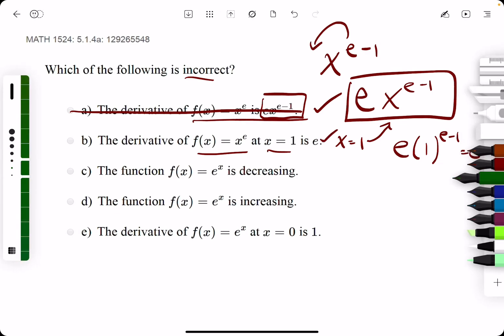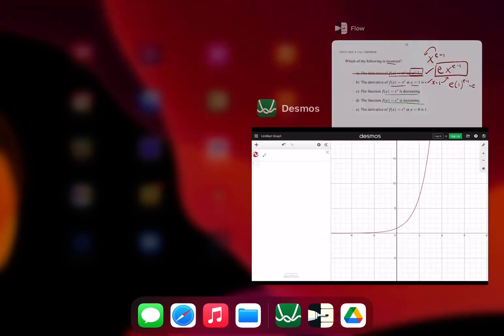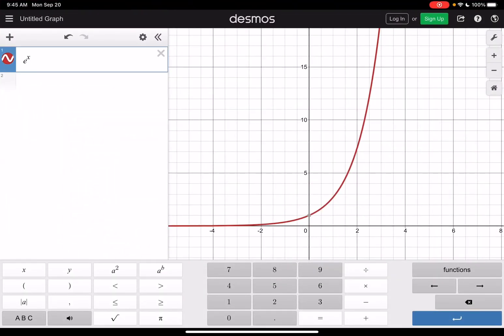Let's switch up. The function e to the x is decreasing. Well, before we answer that, this one says e to the x is increasing. So really only one of these must be true. So let's check out e to the x on a graph.